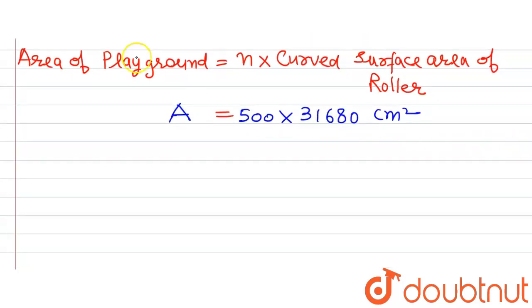To convert it to m square, we will use the following conversion formula: 1 cm square equals 1 divided by 10,000 m square.